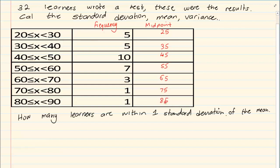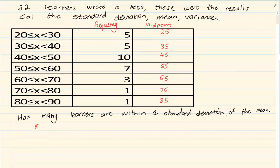The work on the calculator is exactly the same. Press Mode, number 2 for stats, number 1 for variance. Under X you are not pressing the interval boundaries — you press the midpoints: 25, 35, 45, 55, 65, 75, 85. Then go back up, press the right button to move under frequency, and enter: 5, 5, 10, 7, 3, 1, 1. Then press AC, Shift 1, number 4 for variance, and select the standard deviation sign — number 3. My answer is 14.6.